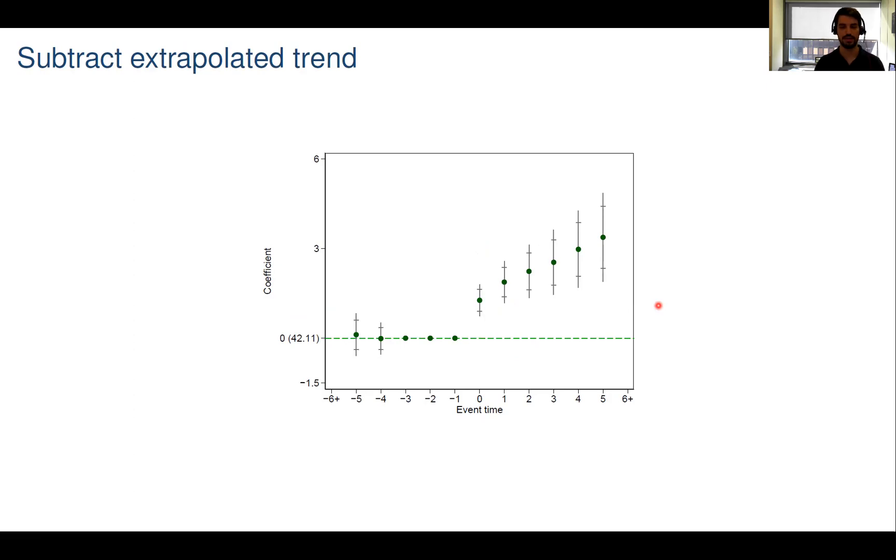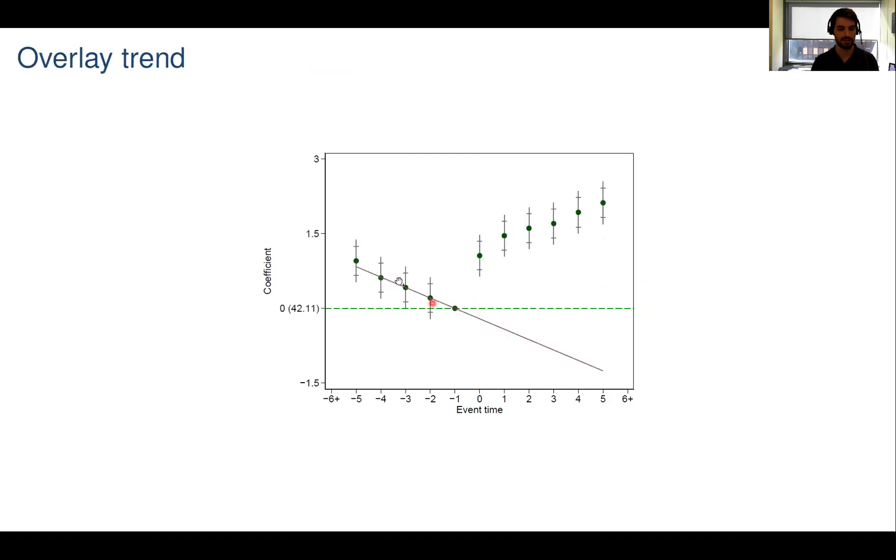Under the assumption of linear extrapolation, we assert that for every state, the state of the local economy evolves linearly and has the same slope relative to passage of a higher minimum wage. So in each state, the state of the economy was on this linear trajectory and would have continued to evolve along that linear event time path, absent an increase in the minimum wage.